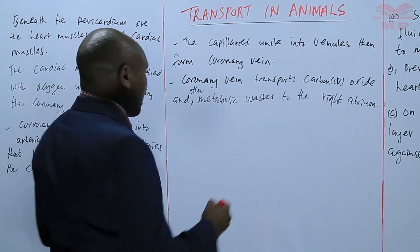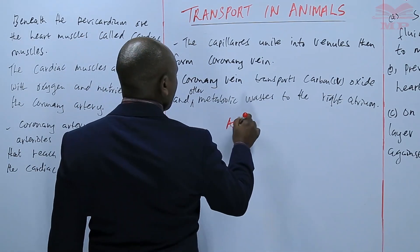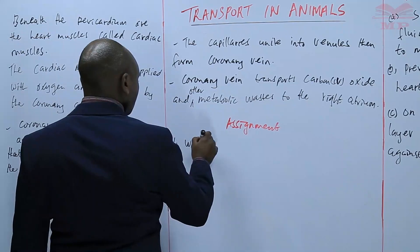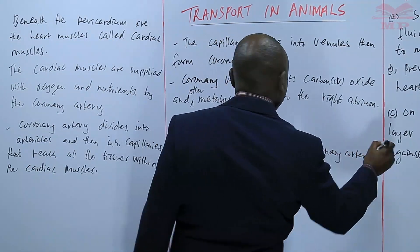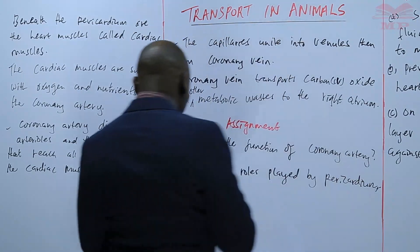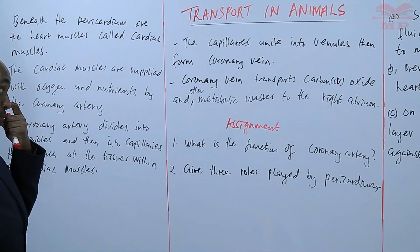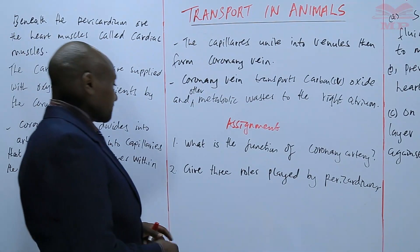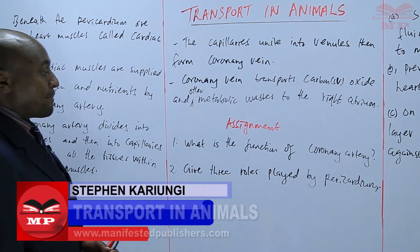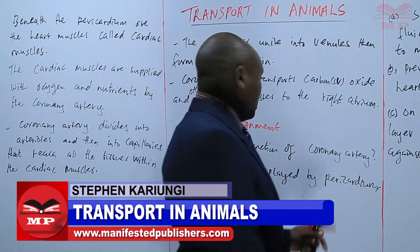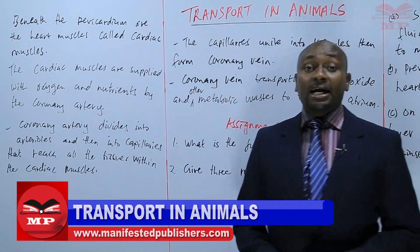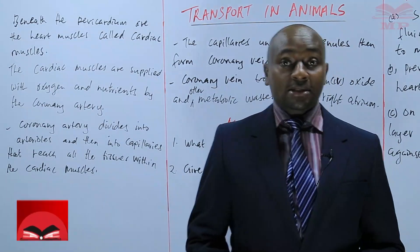That covers the external structure of the heart. We'll have a short assignment on that. Question one: what is the function of the coronary artery? Question two: give three roles played by the pericardium. That marks the external structure of the heart, and we will continue from there next time.